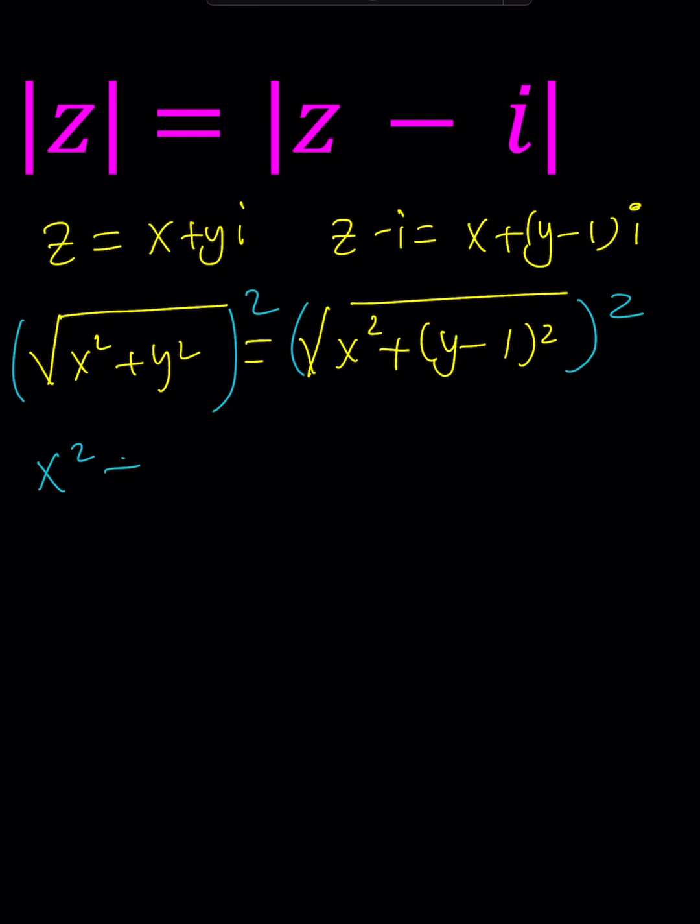So we can basically write this as X squared plus Y squared equals X squared plus, uh-oh, I don't know why this is happening. Sometimes the pen just acts up. We can go ahead and write this as X squared plus Y minus 1 squared.